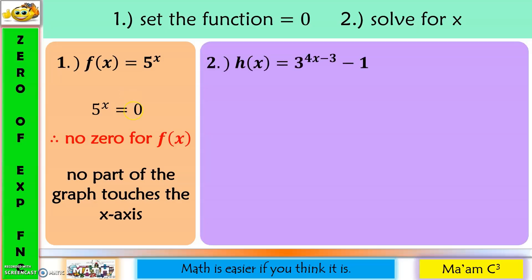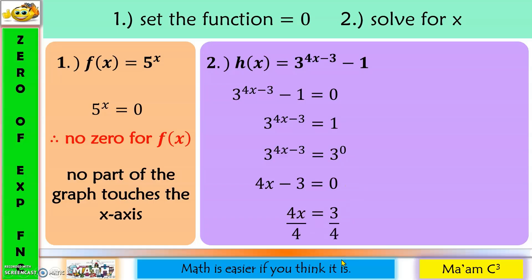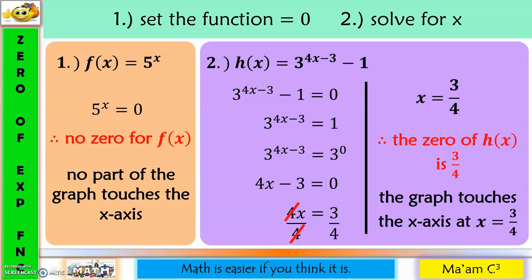Another example: h of x equals three raised to four x minus three, minus one. First step: equate the function equal to zero. To solve for x, move negative one to the other side. We have to make our bases the same, so express one as three raised to zero — since three raised to zero equals one, nothing changes. Now our bases are the same, so focus on the exponents: four x minus three equals zero. Move negative three to the other side and divide both sides by four. So x equals three over four. Therefore, the zero of h of x is three-fourths, meaning the graph touches the x-axis at x equals three-fourths.